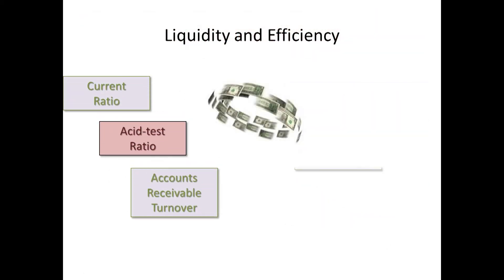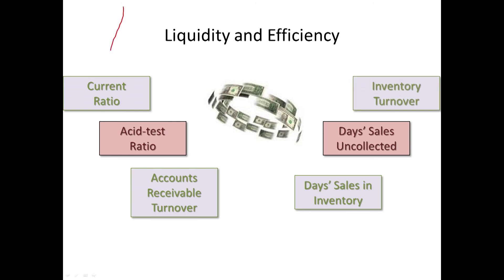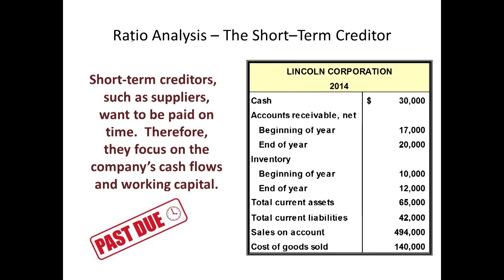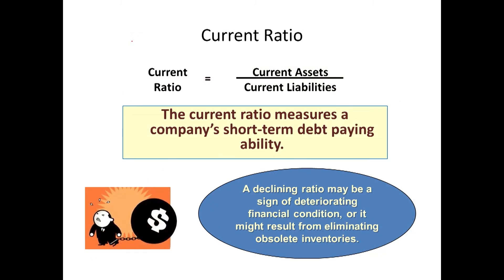Let's talk about liquidity and efficiency. This is such an important set of ratios. Your current ratio and your acid test ratio — those measure your ability to pay your debt in the short term. Short-term creditors like to focus on this when analyzing a company. Remember the current ratio: we do current assets divided by current liabilities. This is a very important ratio that I always compute for my clients and we look at it over time to see if it's deteriorating.